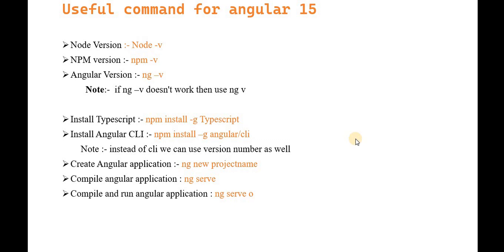If you want to install a specific version of Angular, you have to provide that version name as well. These commands we have already seen in the previous video while creating our new Angular project. If you want to create an Angular application, we use ng new followed by the project name you want to give.